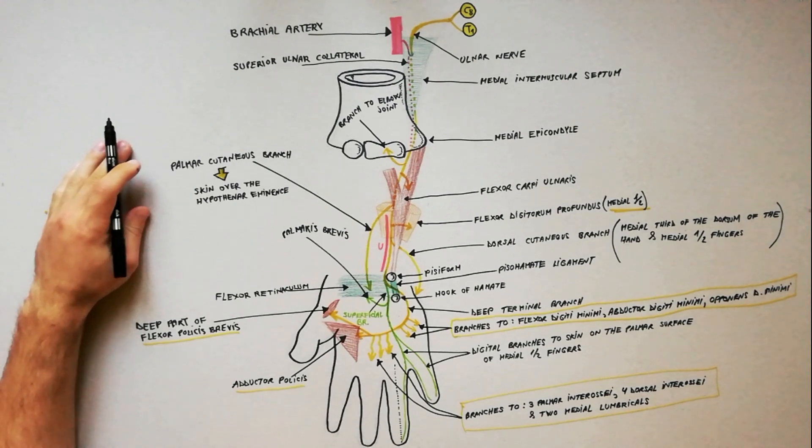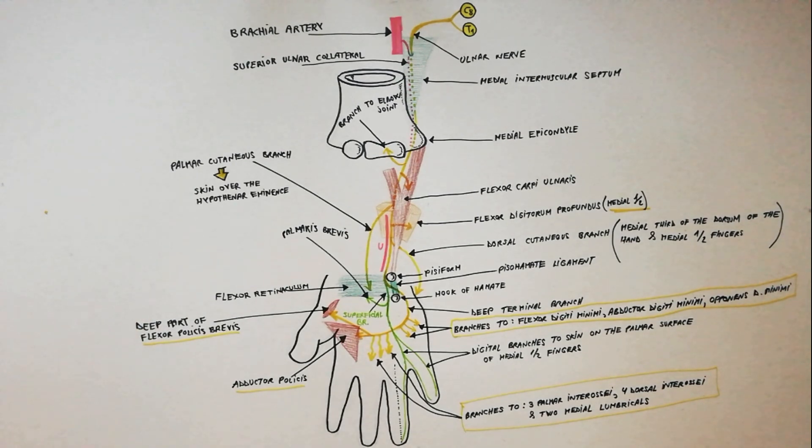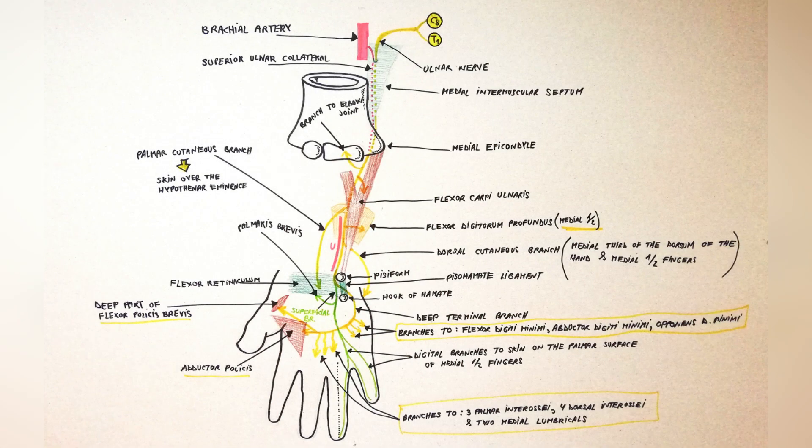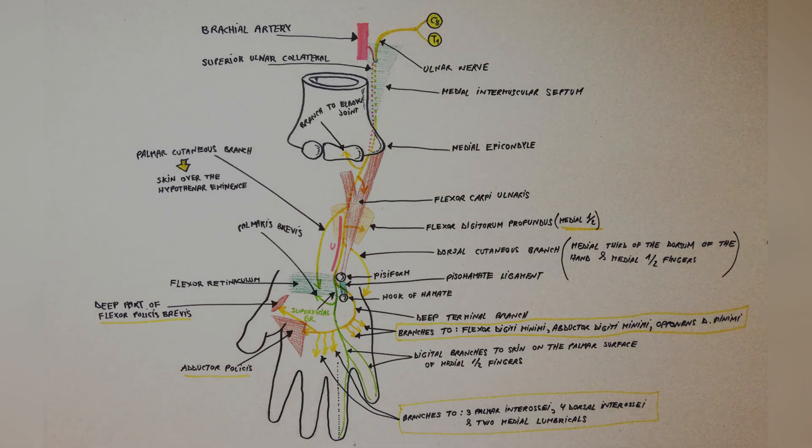The ulnar nerve is often referred to as nerve of fine movements or the musician's nerve because, as we observe, it innervates most of the intrinsic muscles of the hand that are involved in the fine intricate hand movements as required by musicians while playing musical instruments.